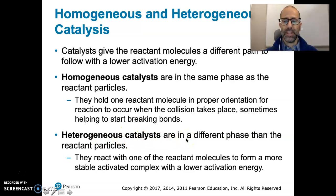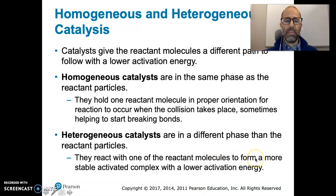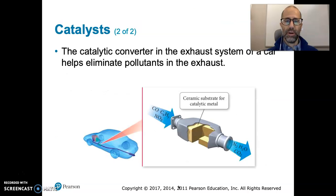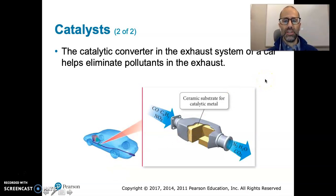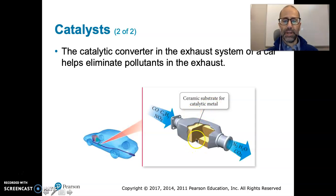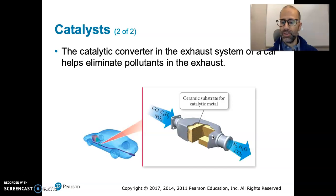Heterogeneous catalysts are in a different phase than the reactant particles. They react with one of the reactant molecules to form a more stable activated complex with a lower activation energy, producing a product with a quicker reaction. A catalytic converter in your car's exhaust system, which helps eliminate pollutants, is an example of a heterogeneous catalyst. You've got the ceramic substrate for the catalytic metal in the solid phase, and then the gases come in and bind to this catalytic metal, forming a transition state that allows those gases to react more quickly.